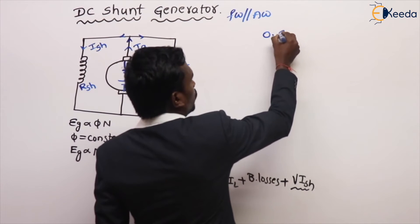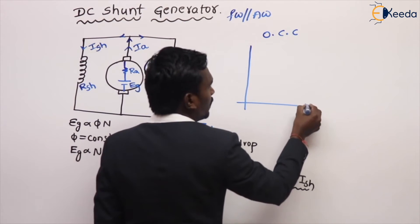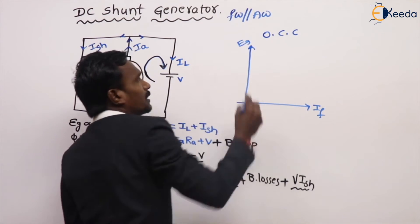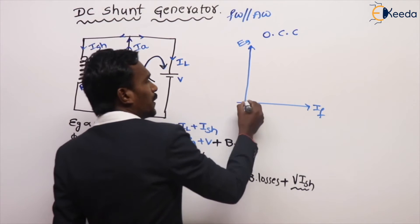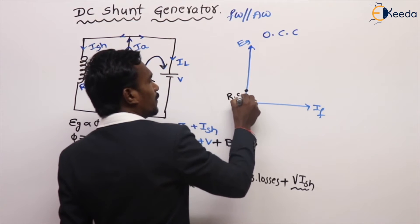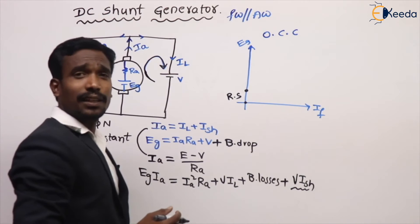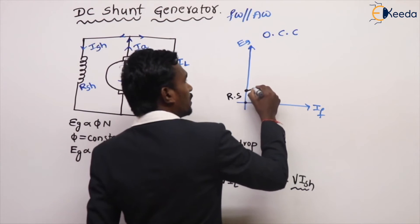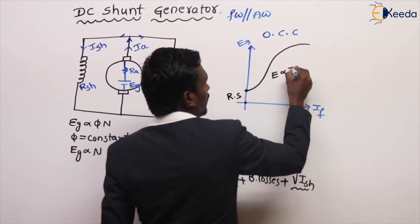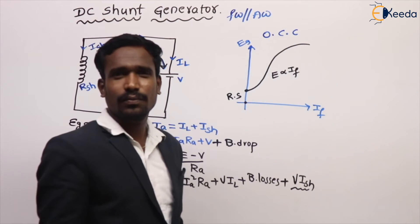Open circuit characteristics are drawn between field current and generated EMF. Even though field current is zero, the generator produces some EMF due to residual flux — residual magnetism — because this is a self-excited generator. When the field current increases, EMF also increases, since EMF is directly proportional to field current, up to saturation.